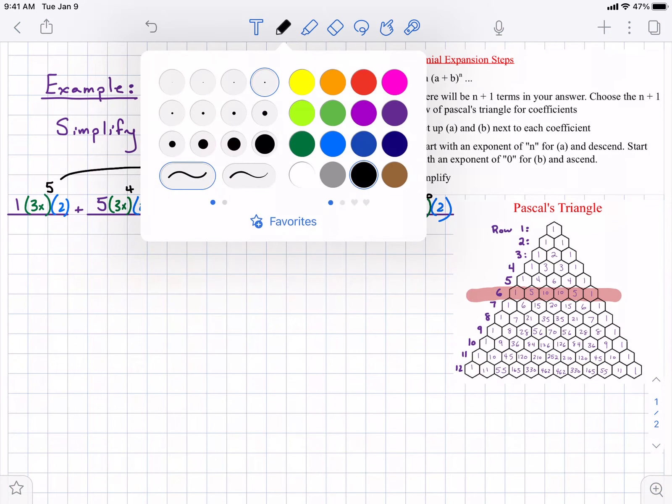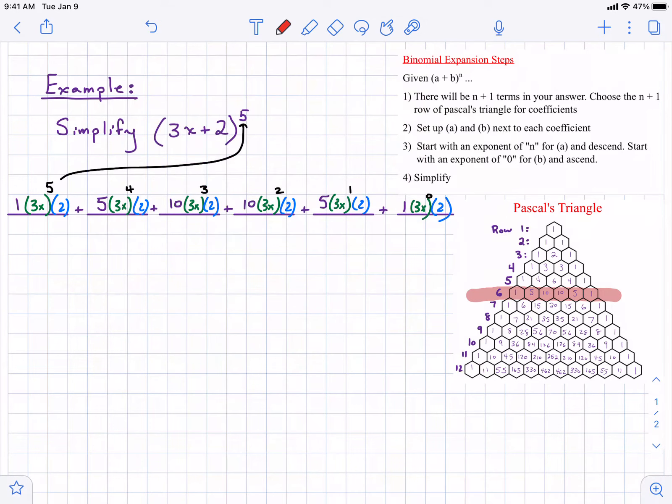We're going to do the opposite for the second term. Our second term is going to instead start with 0 and ascend or count up. Again, if you're watching this video kind of randomly here, we're not using combinations, which is probably the more popular or common way to apply this formula. We're using Pascal's triangle.